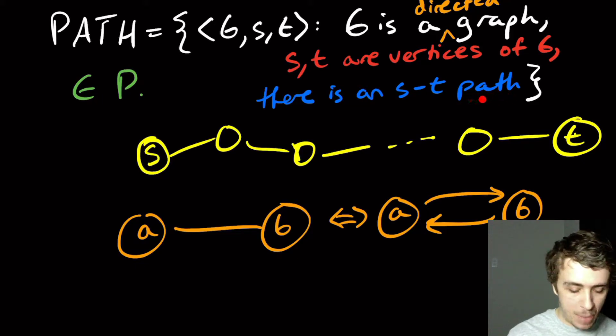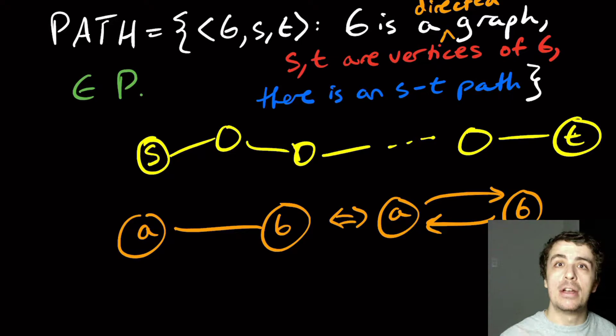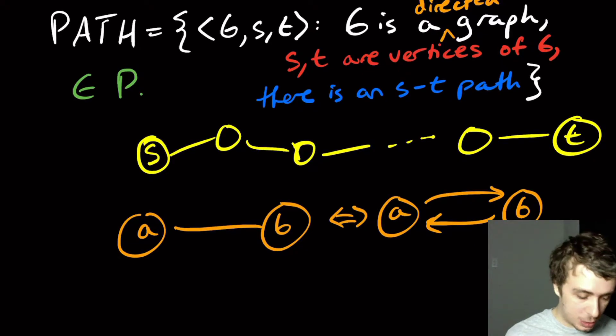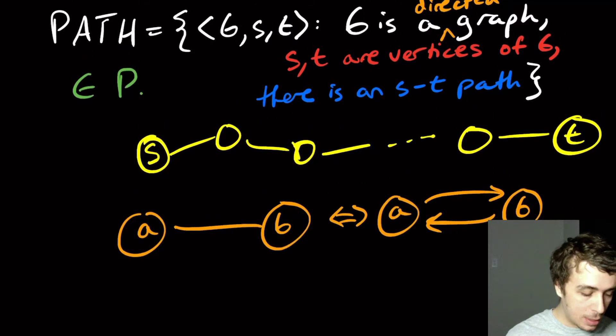Another thing is that path doesn't repeat vertices. So here we usually mean simple path, meaning that there is no repeated vertex along the way, which won't actually matter for our purposes, but it's just good to have an idea.